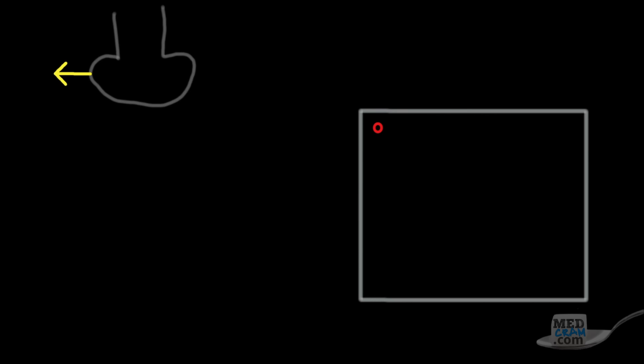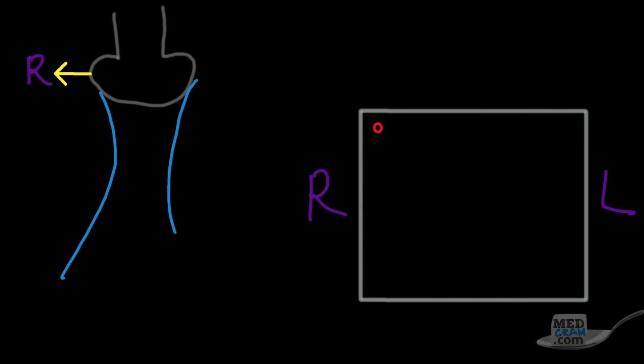We can always find the orientation of the ultrasound screen by asking ourselves two questions. The first question is: on my ultrasound transducer, where is the indicator pointing? That corresponds with where the indicator is on the screen, and the opposite of that will also be true. So if the indicator is pointing towards the patient's right, the left side of the screen will represent the patient's right, and the opposite side represents the patient's left. The second question is: where is the ultrasound beam shining from, and where is it shining to? If it's shining from anterior to posterior, the top of the screen is anterior and the bottom is posterior.